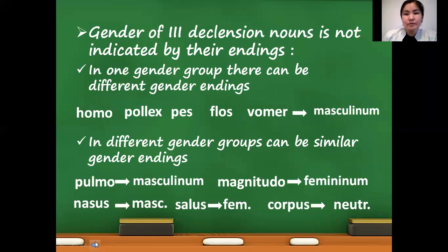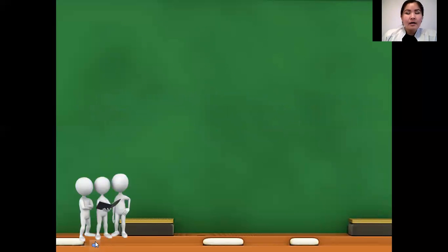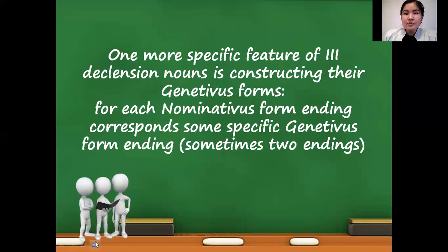First, you know that it is impossible to indicate the gender of third declension nouns because of two reasons. In one gender group there can be different gender endings, and vice versa — in different gender groups you can meet the same confusing endings. The next specific feature is constructing the genitive form of third declension nouns, which is also a very complicated process. It is very important that you know how to construct the genitive form correctly.